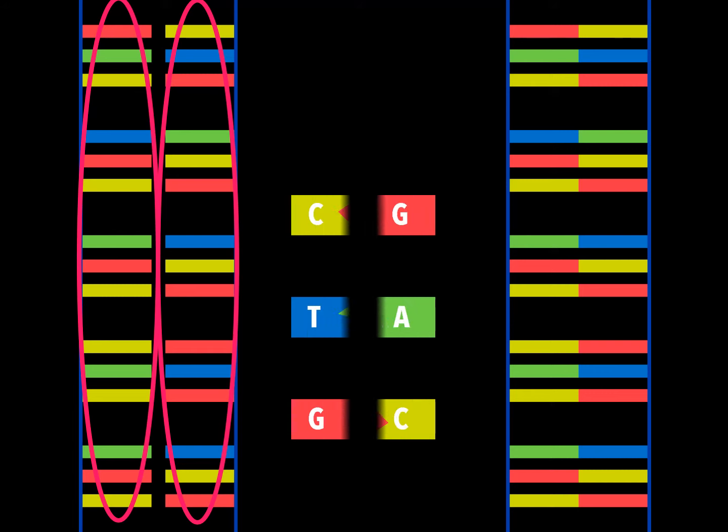Nucleotide bases from one strand join with nucleotide bases from the other strand to form the rungs of the ladder. A always joins with T, and G always joins with C.